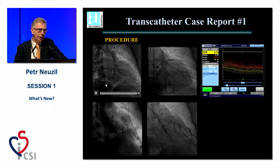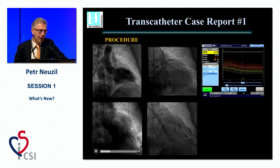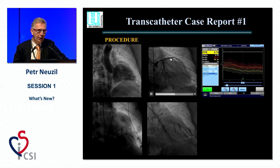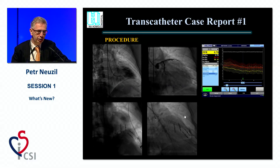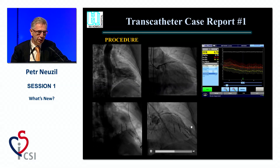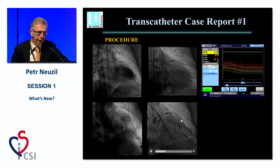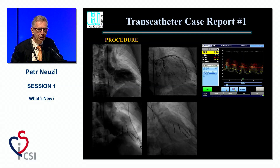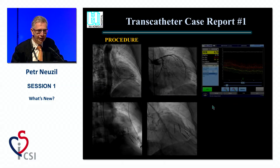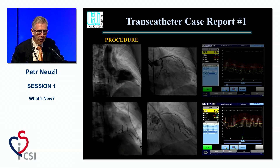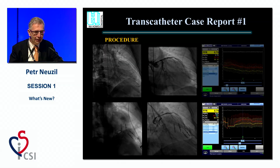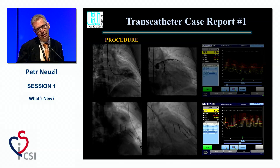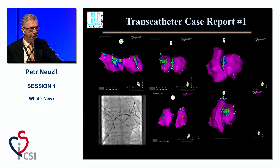We stopped at the level where I showed you the LV gram prior and after anchor placement. What I didn't show you is the LAD flow prior to and after this remodeling. You can see the effect on the LAD anatomy, but more importantly, we measured FFR before the procedure at 0.7 — indicating ischemic flow — and after the procedure it increased to nearly 0.8.